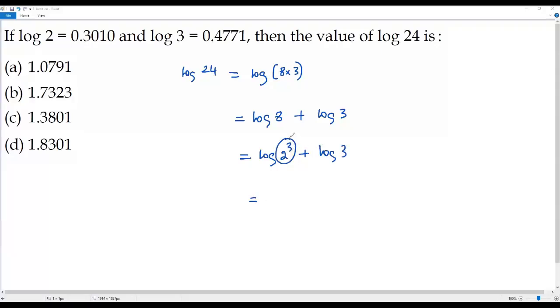Here the argument is exponential. Whenever the argument is exponential, the exponent can be moved in front of the logarithm and multiplied by the logarithm. So it's the power rule of logarithm. In the next step we have 3 times log 2 plus log 3. Now we got the given logarithm in terms of log 2 and 3.